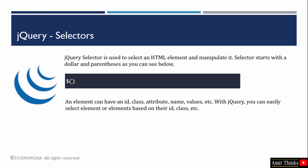By using the jQuery selector, you can easily select any HTML element on a webpage — that means an HTML document. After selecting it, you can easily manipulate it. The syntax of selectors always begins with $ and parentheses is followed. You can easily select elements based on their ID, class, attribute, name, or values using the selectors.